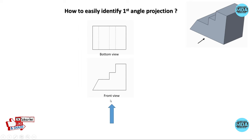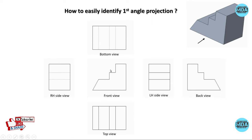If you are looking from the bottom side, some edges are not visible, which is why they appear as dotted lines. And if you are looking from the bottom side, you will get the bottom view at the top. These are the possible six views you will get from the 3D object in first angle projection.